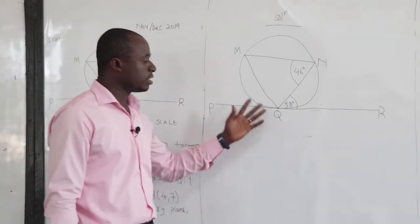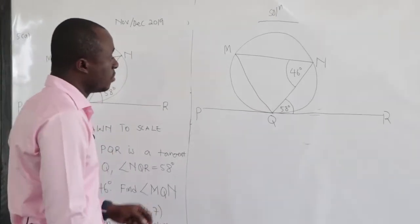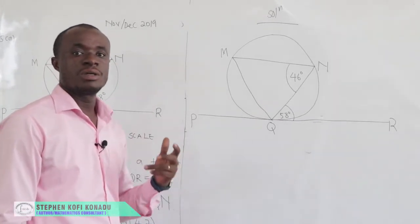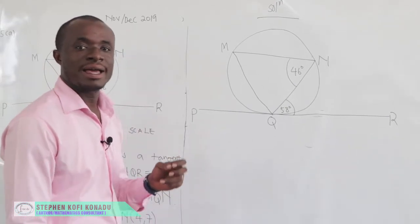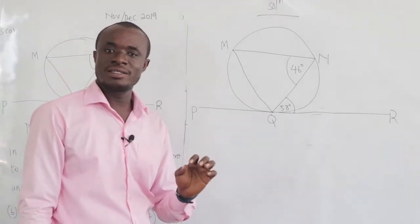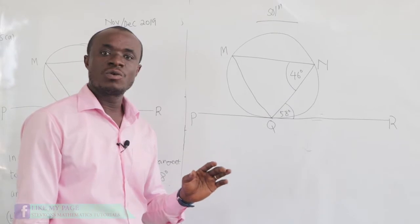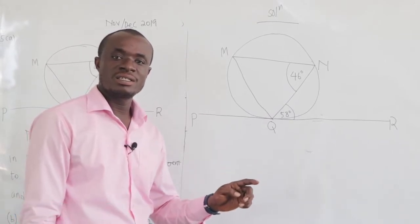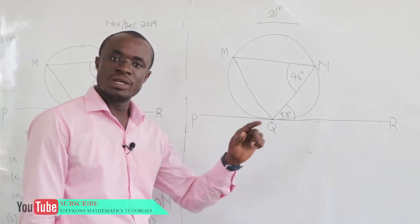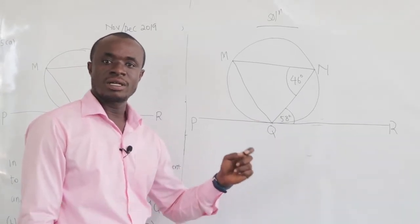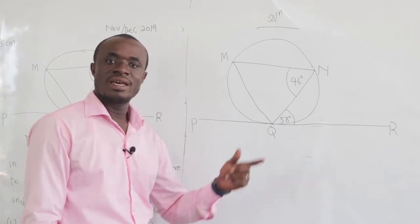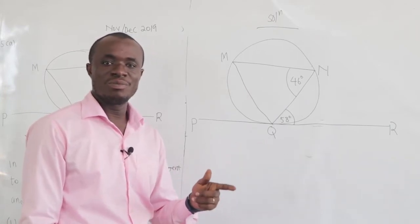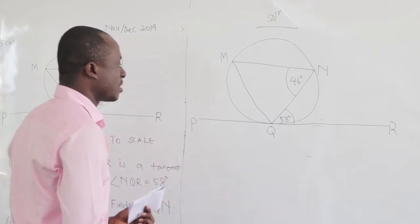Make sure that you sketch the diagram. Note that this is a tangent and chord relationship. The angle a chord and a tangent make is equal to the angle the chord makes in the alternate segment. The angle the chord and a tangent make is equal to the angle the chord makes in the alternate segment.